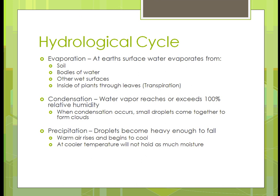Condensation is when the water vapor reaches or exceeds 100% relative humidity. When it does that, small droplets come together and form the clouds. Precipitation is when the droplets are heavy enough and change from vapor into water droplets. The warm air rises and then begins to cool, and at the cooler temperature the air is not as capable of holding moisture — that's why the humidity level changes and goes down as precipitation falls.